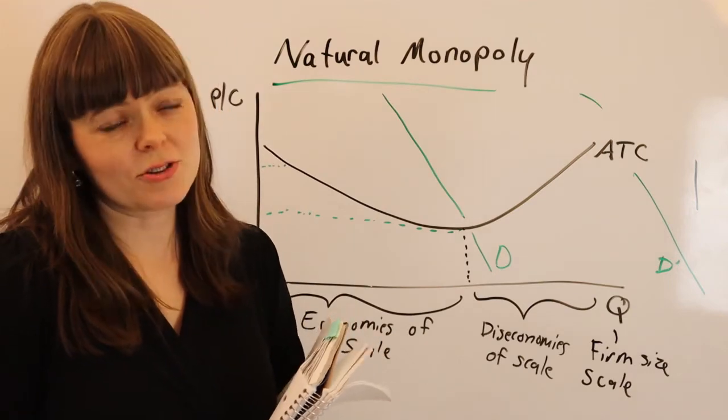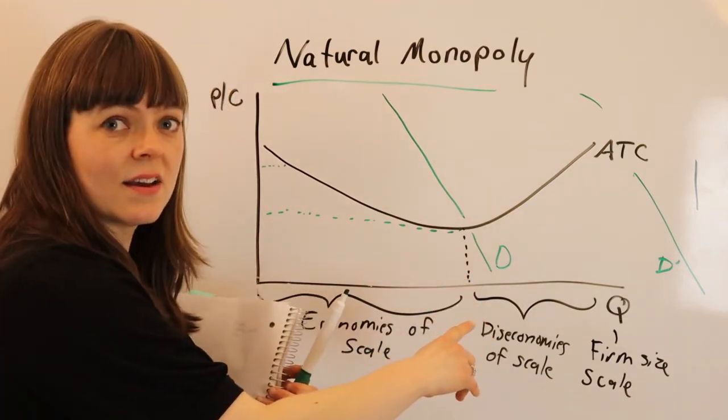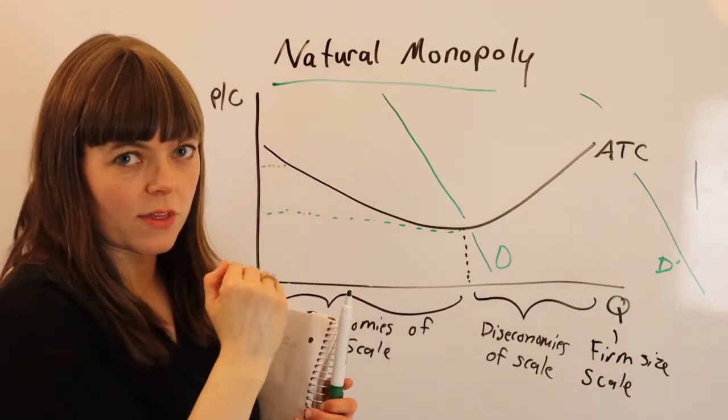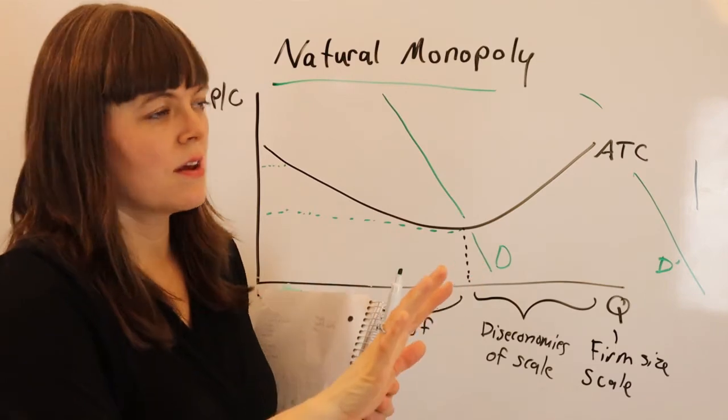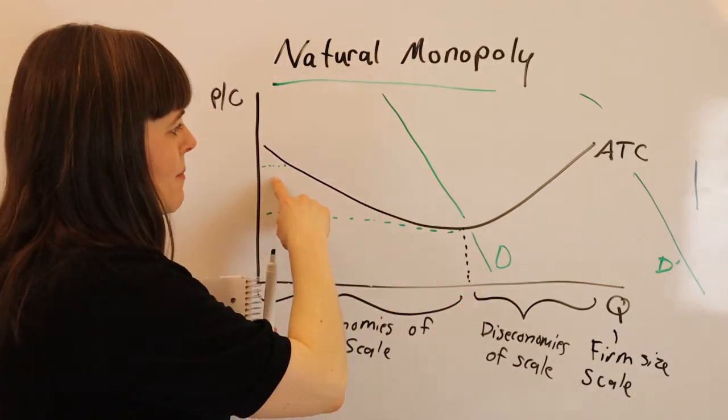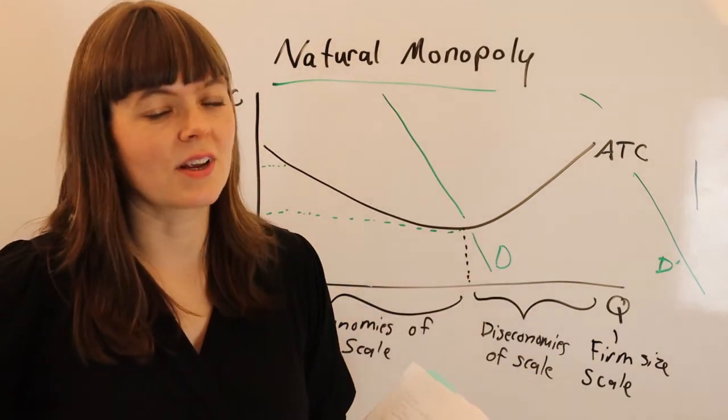And natural monopolies can still be bad because they might keep the price really high unless somebody tries to enter, in which case they lower the price to keep that person out, and then they'd raise the price again. So you're kind of stupid to try to come in and compete with a natural monopoly that already has huge economies of scale.